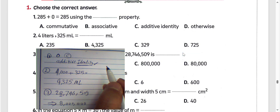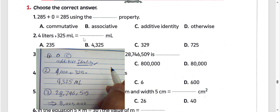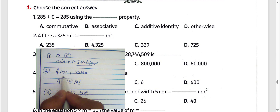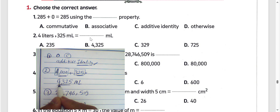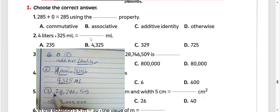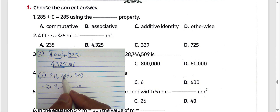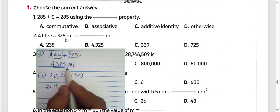Next, question number 2: 4 liters and 325 milliliters equals 4,325 milliliters. Because we know 4 liters equals 4,000 milliliters. So 4,000 milliliters plus 325 milliliters gives us 4,325. The result is 4,325. Choose letter B. For example: 4 liters and 325, that is 4,000 and 325 milliliters.